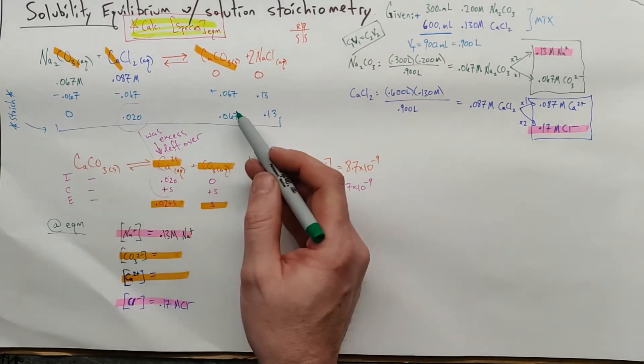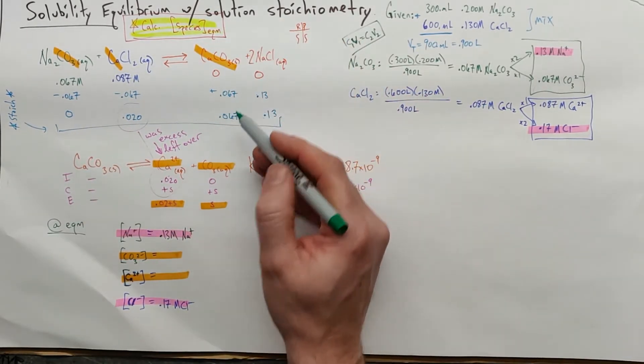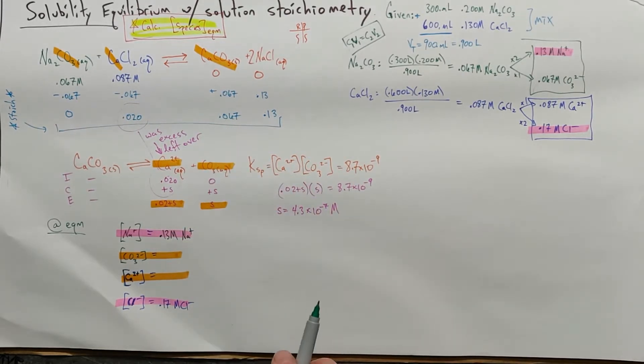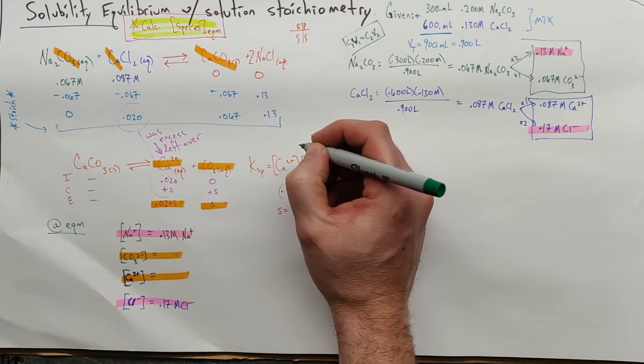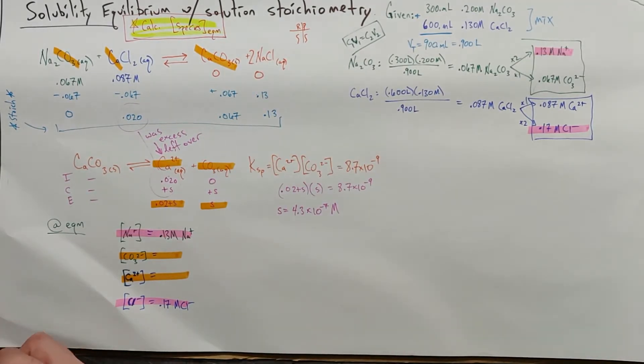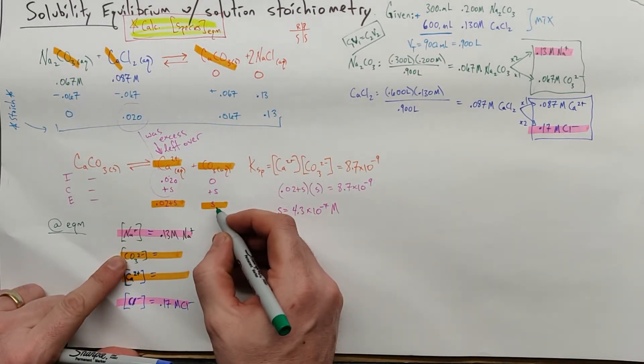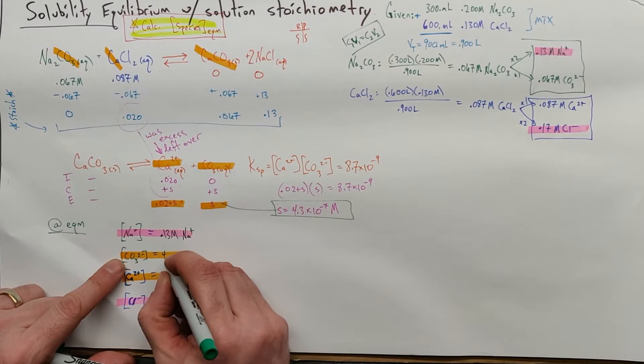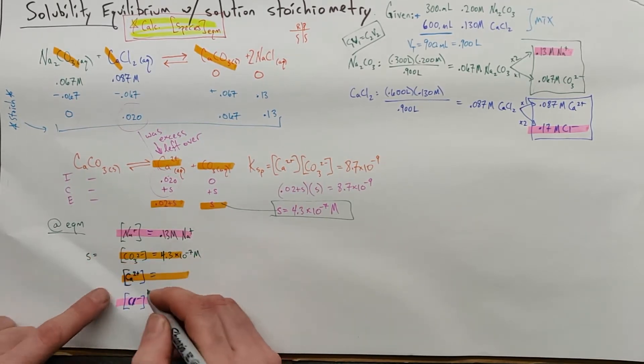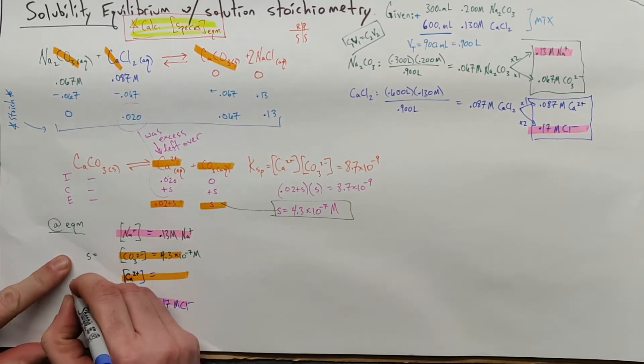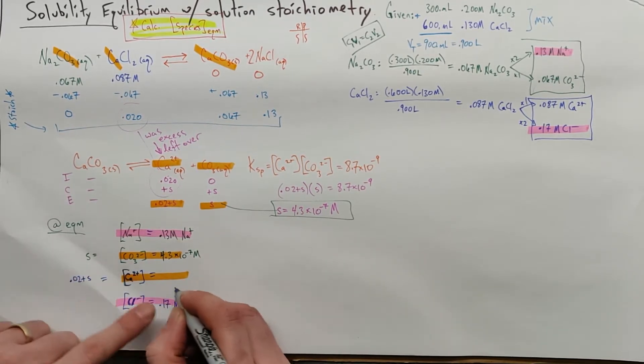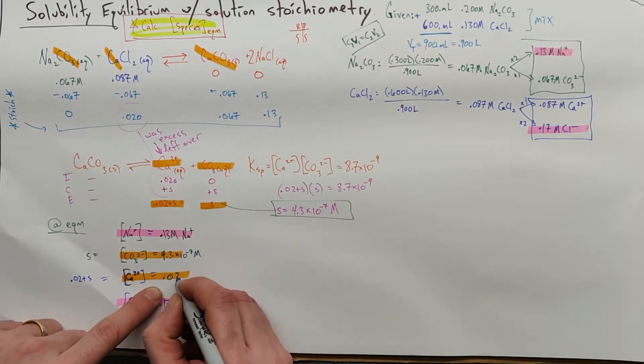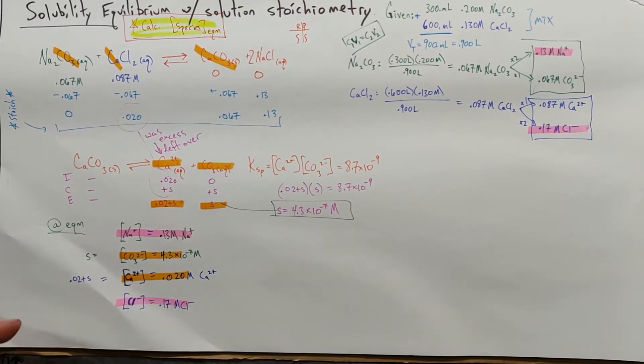These things reacted and most of it precipitated out. That's why we're not using these numbers. We had to do some stoichiometry to see how much could have precipitated out, 0.067, and almost all of that stayed precipitated out. As we look at this then, our carbonate concentration is supposed to be S, so this is our carbonate ion concentration, 4.3 times 10 to the minus 7th molar. And then our calcium ion concentration is 0.02 plus S, which is just our 0.02. And that is the concentration of all of our species in the final solution, which was our end goal.